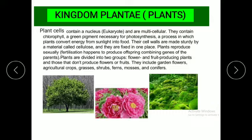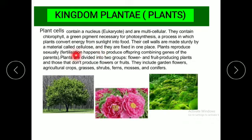Let me introduce you to kingdom Plantae and kingdom Animalia. Kingdom Plantae consists of plants. Plant cells contain a nucleus and are multicellular. They contain chlorophyll, a green colored pigment necessary for photosynthesis. Photosynthesis is a process in which plants convert energy from sunlight into food. The cell walls are made sturdy by a material called cellulose, and they are fixed in one place. Plants reproduce sexually, i.e., fertilization happens to produce offspring combining genes of the parents.